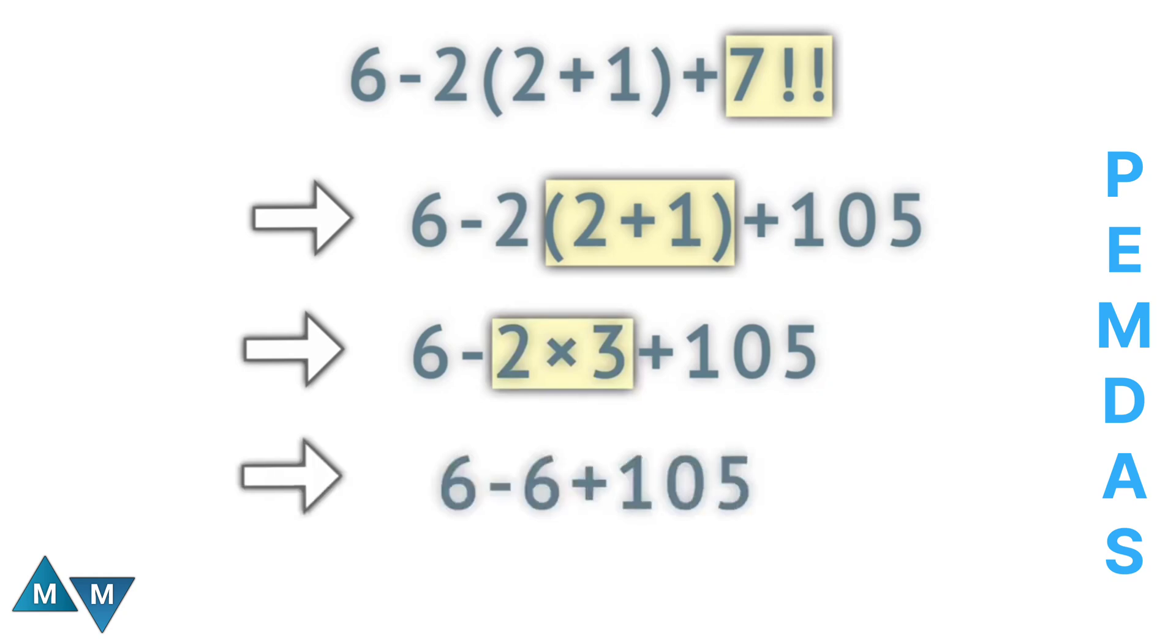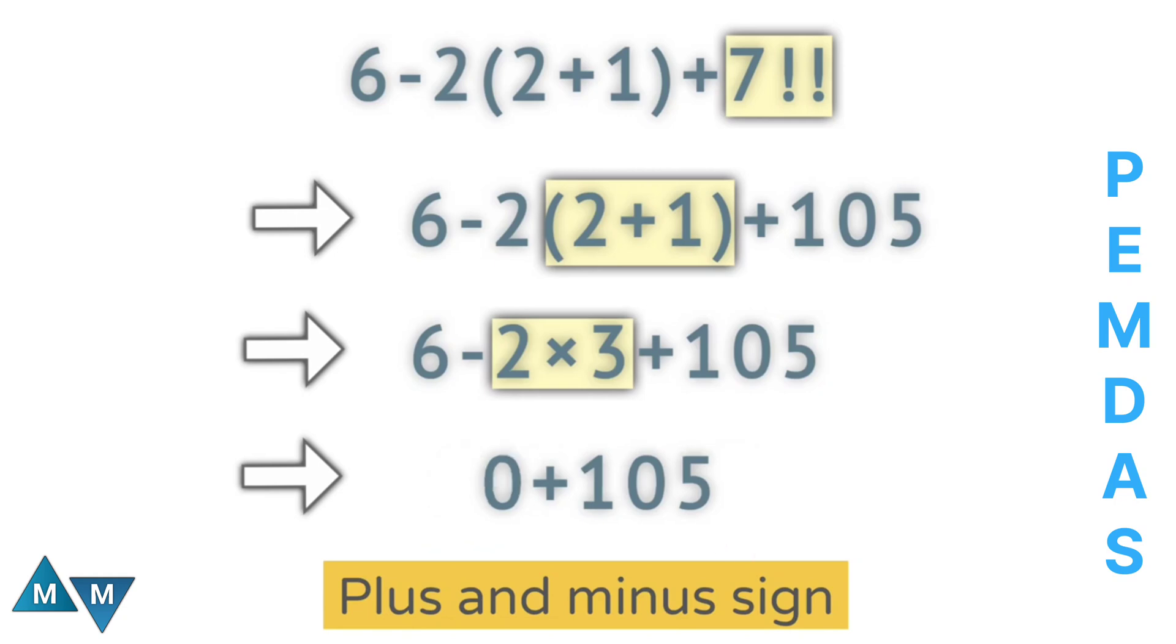Now we have the following expression. Now the expression only contains plus and minus sign, since both the signs have the same priority. So expression will be solved from left to right. Now 6 minus 6 will give 0. Now finally we get 105.